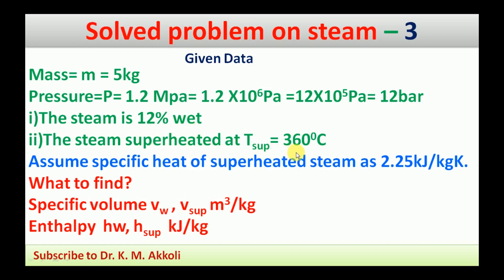The second case is superheated steam at T_sup = 360°C. To calculate the enthalpy of superheated steam, we need the specific heat, which is not given. So we assume the specific heat of superheated steam as 2.25 kJ/kg·K. We need to find specific volume v_w and v_sup, and enthalpy h_w and h_sup.